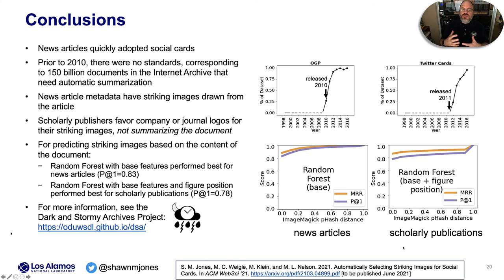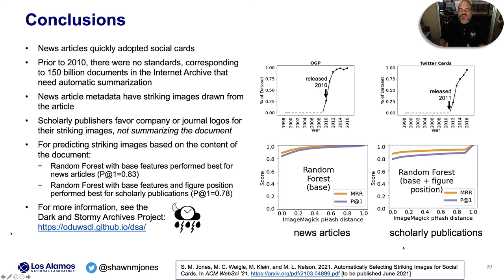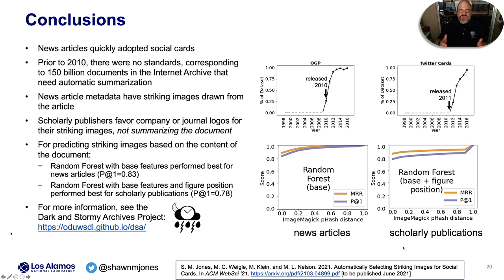In conclusion, news articles quickly adopted social cards once the metadata was available. Prior to 2010, card standards didn't exist, corresponding to roughly 150 billion documents in the Internet Archive needing automatic summarization or striking image prediction. News article metadata has striking images drawn from article content, while scholarly publishers favor company or journal logos. Random forest with base features performed best for news articles with a P@1 of 0.83, and adding figure position achieved P@1 of 0.78 for scholarly publications. For more information, please see the Dark and Stormy Archives project. Thank you.